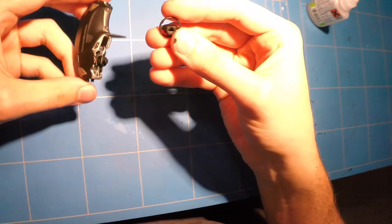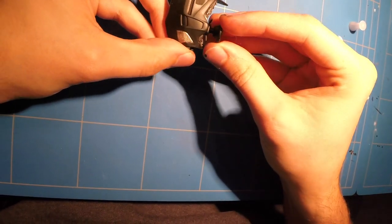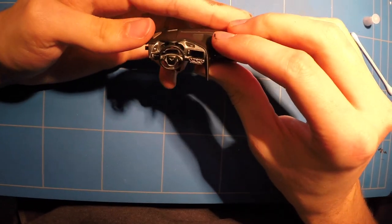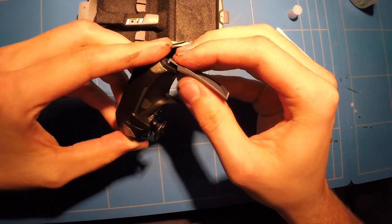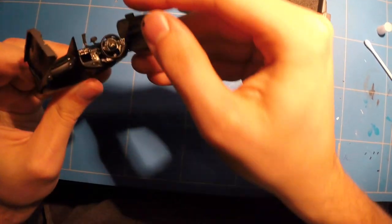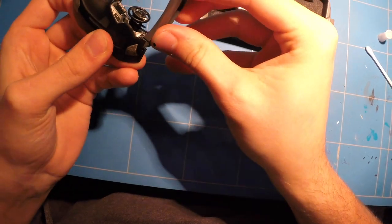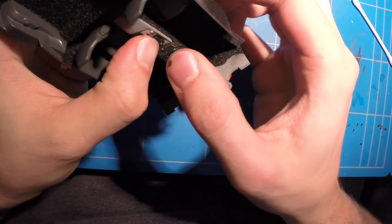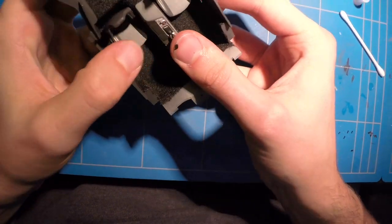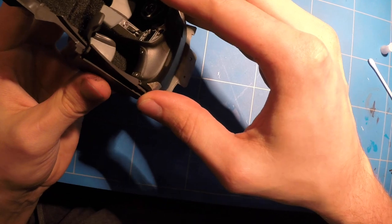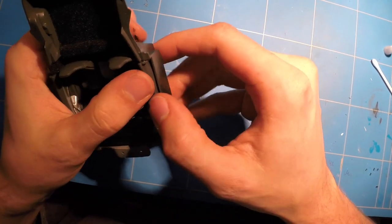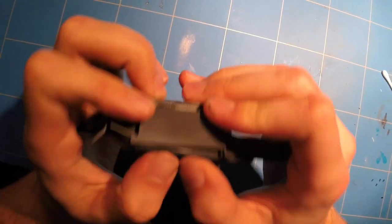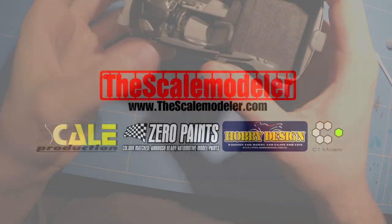With everything painted, detailed and flocked, it was time to move on to assembly. As this is a snap-tight kit, no glue is needed. I just put a small amount on it just to be sure.